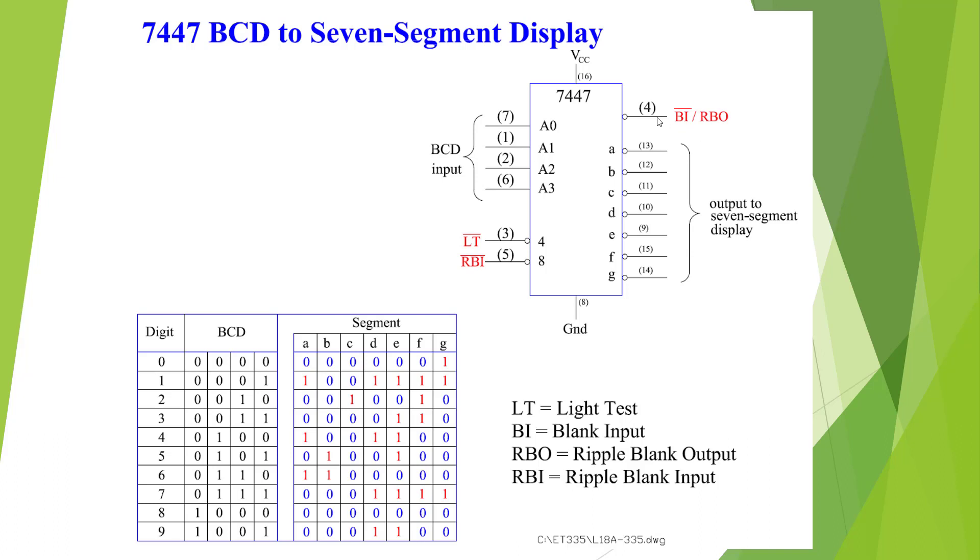If we pull pin 4 low, we get a blanking input. That means that no display under any condition, no matter what we put into the BCD. Light test is the same thing. Once light test is pulled low, it'll stay at 8 and ignore all the other signals.